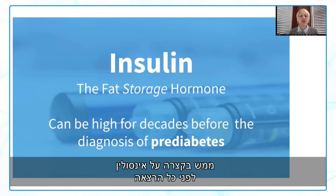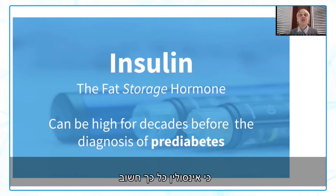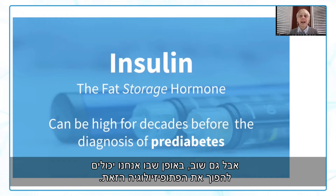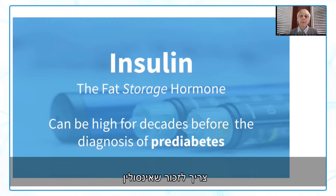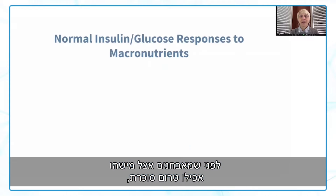I always like to talk briefly about insulin before any lecture on type 2 diabetes, because insulin is so key to the pathophysiology of this disease, and also in how we can reverse that pathophysiology. We have to remember that insulin is our fat storage hormone, and it can be high for decades before someone is diagnosed with even pre-diabetes.